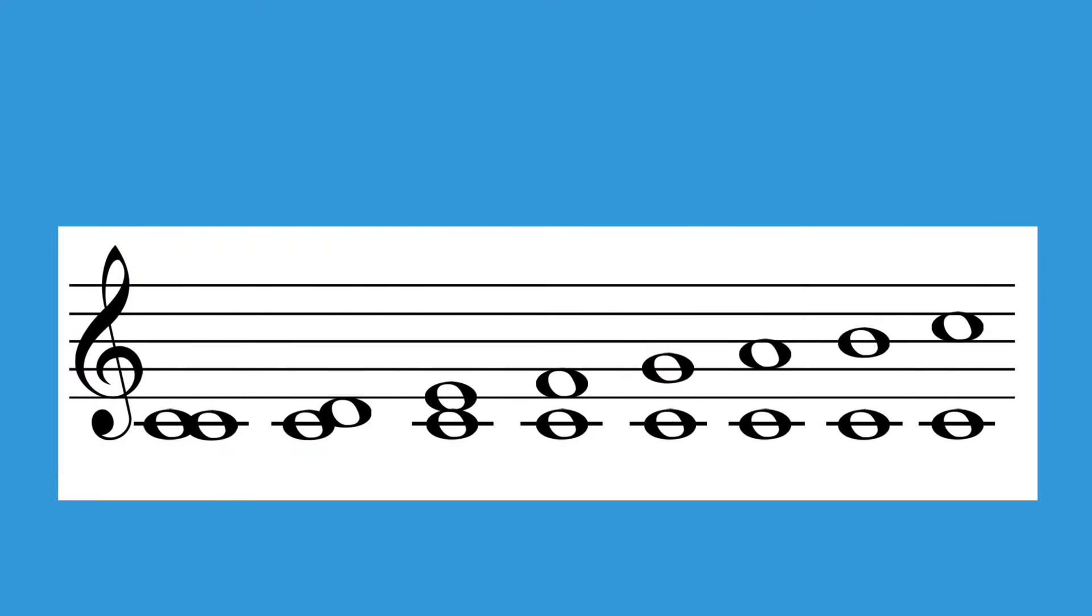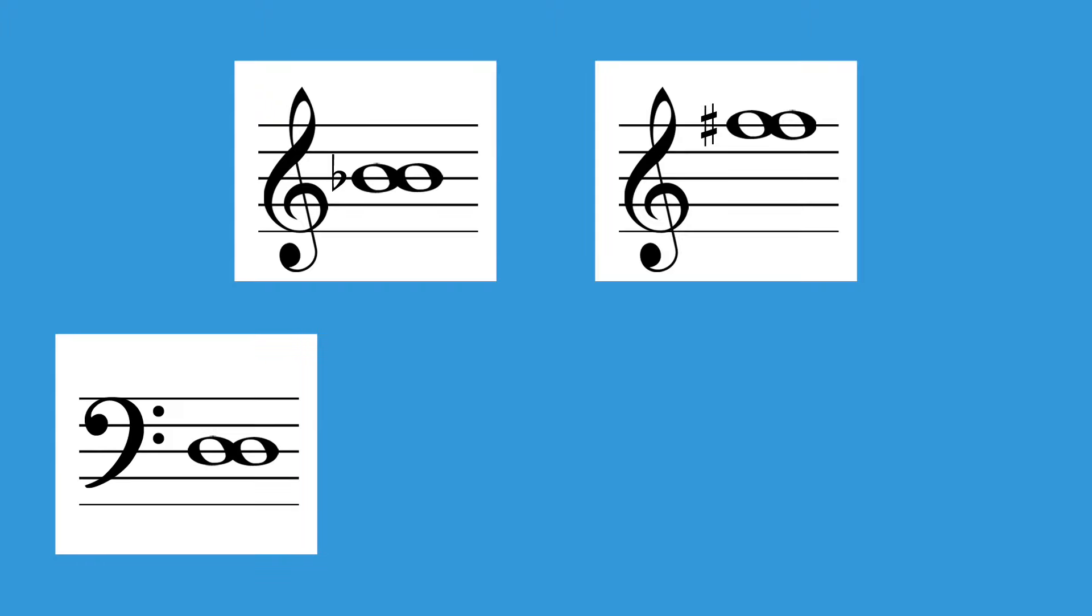Let's take this C major scale as an example to find the distances of the intervals between the tonic and the rest of the scale degrees. The first interval is from the tonic to the tonic. You might think we would call this distance a first, but it has a special name. The distance between any two identical notes is called a unison. This is a unison, this is a unison, and all of these are unisons.